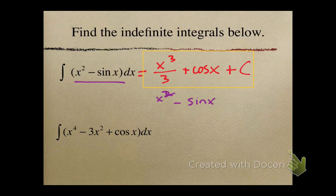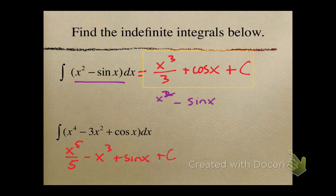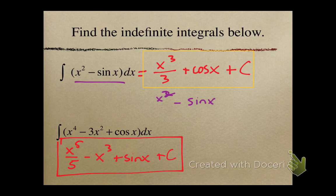Let's look at one more example: the indefinite integral of x to the 4th minus 3x squared plus cosine x dx. An antiderivative for x to the 4th would be x to the 5th over 5. An antiderivative for 3x squared would be x cubed. An antiderivative for cosine x is sine x. Remember to add plus c at the end to represent the constant that disappears when we take the derivative. These are indefinite integrals — no limits of integration — giving us a family of functions that all have the same derivative.